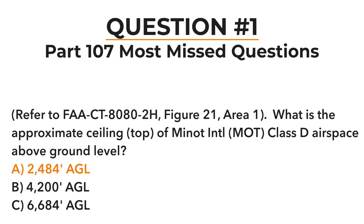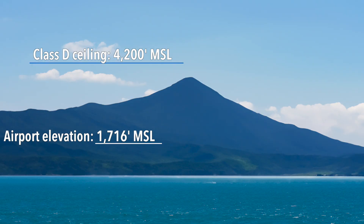Answer B is incorrect because that would only be valid if Minot were at sea level, but it's higher than sea level. Answer C is incorrect because it's impossible — even in the Dead Sea or Death Valley — for the top of that airspace to be well over 6,000 feet above ground level when it's only 4,200 feet above sea level.